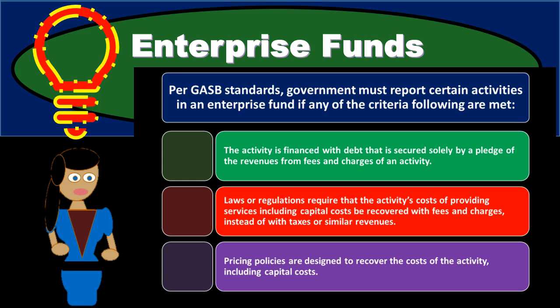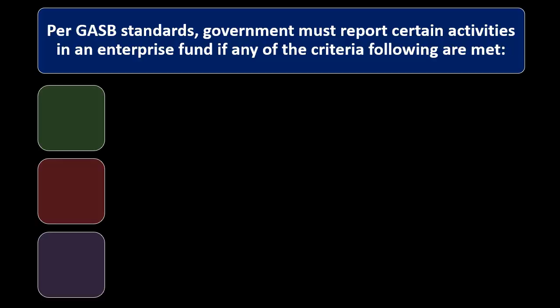There are three categories of funds in general: the proprietary funds, the governmental funds — the largest category — and the fiduciary funds. The proprietary funds, such as the enterprise funds, use an accrual basis, which is different from the governmental funds which use the modified accrual basis. Enterprise funds are those proprietary funds which have customers typically outside of the organization, distinguishing them from the other proprietary fund, which is the internal service fund.